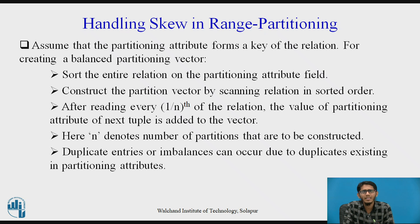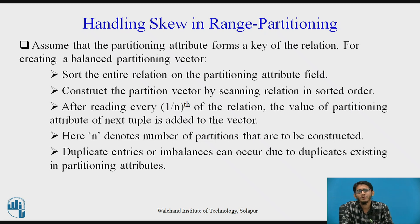Care is taken that the partition vector is designed so that after every one-by-nth part of the relation, whatever value appears in the partitioning attribute field is added to the partitioning vector. Here, n denotes the number of partitions to be constructed — how many sites the tuples are mapped to. One important thing is that duplicate entries or imbalances can also occur due to duplicates in the partitioning attribute, such as the same value appearing for multiple tuples.